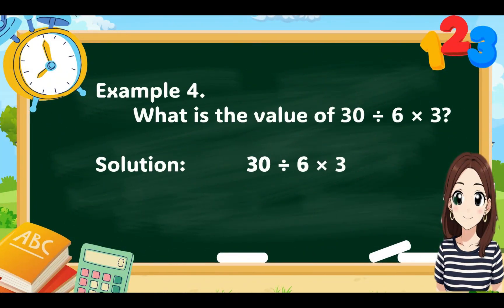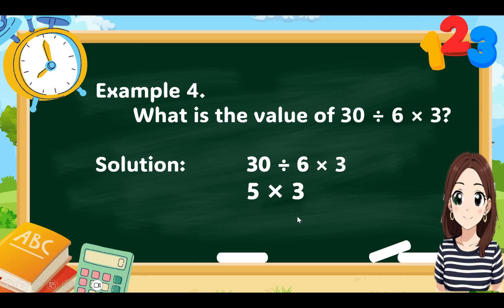Example 4: What is the value of 30 divided by 6 times 3? Working left to right, divide first: 30 divided by 6 equals 5. Then 5 times 3 equals 15. The final answer is 15.